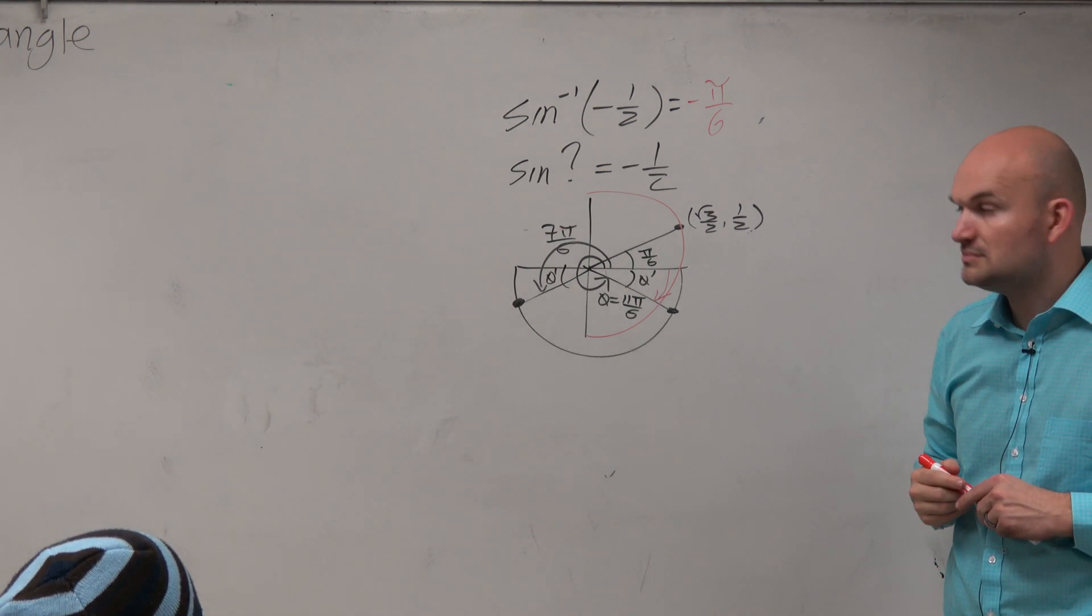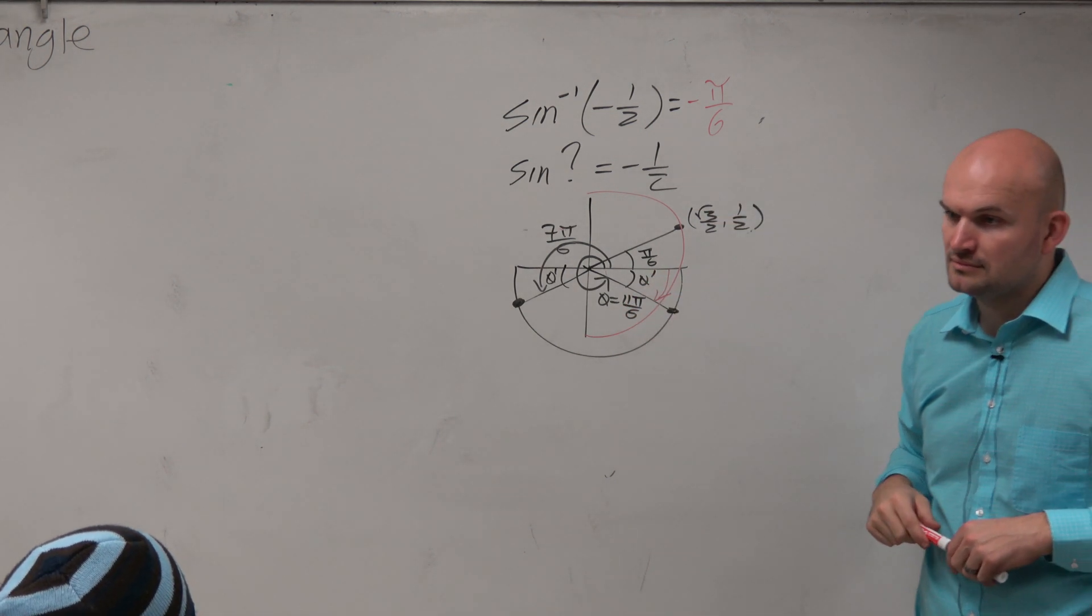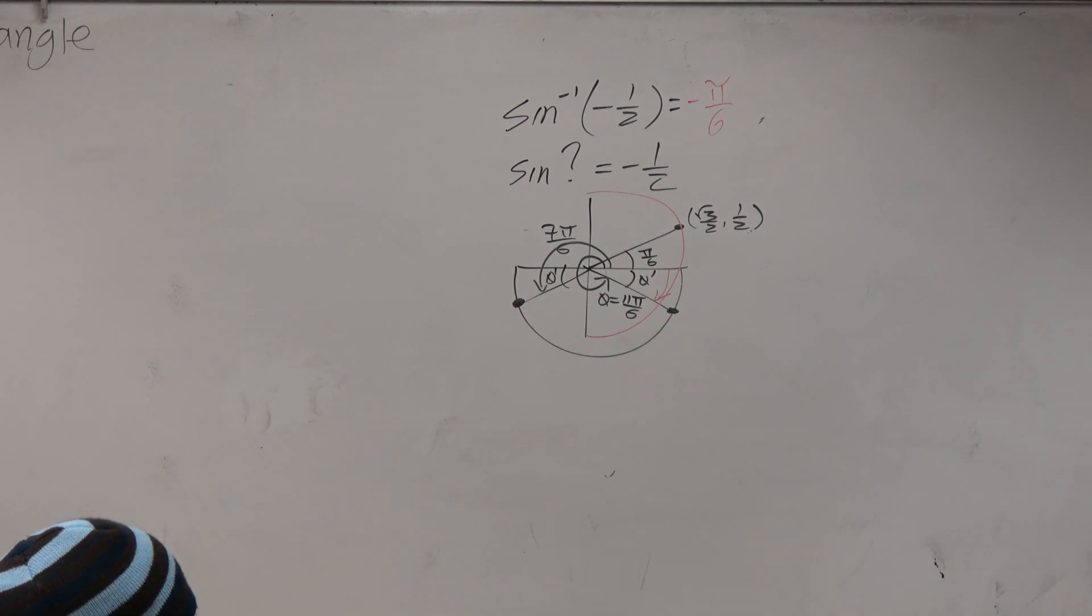Oh, OK. So if it's negative, it has to be down here. If it was positive, if I said what is the sine inverse of 1/2, your answer is π/6.